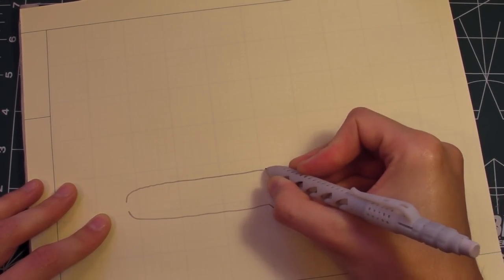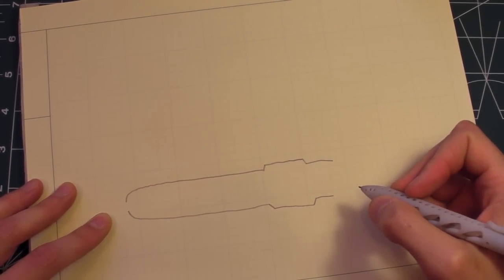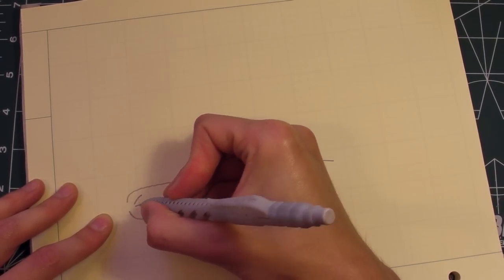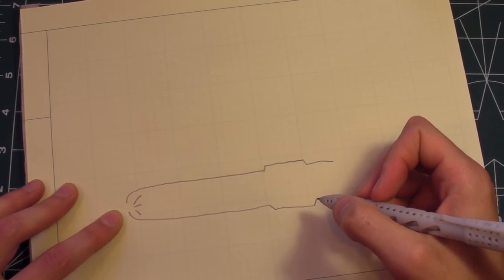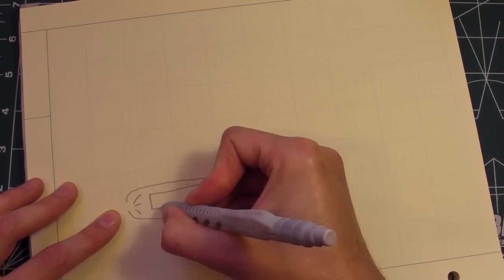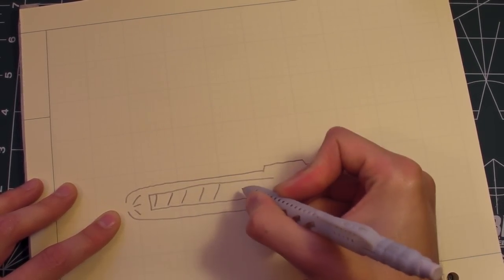If this is the general outline of the pencil, and forgive my artistic abilities, there are three fingers up here which put friction on the lead. Now I'm going to add a screw drive in the middle that pushes the lead out.